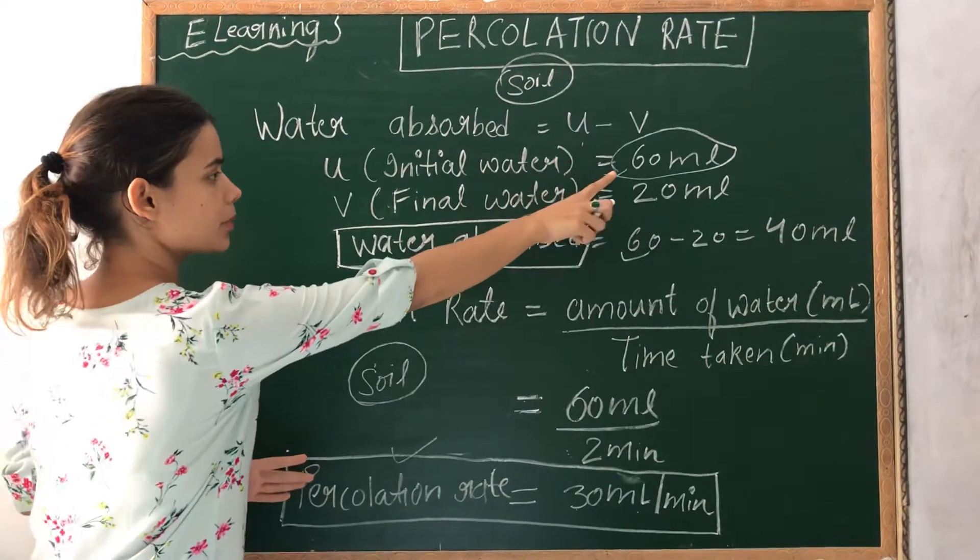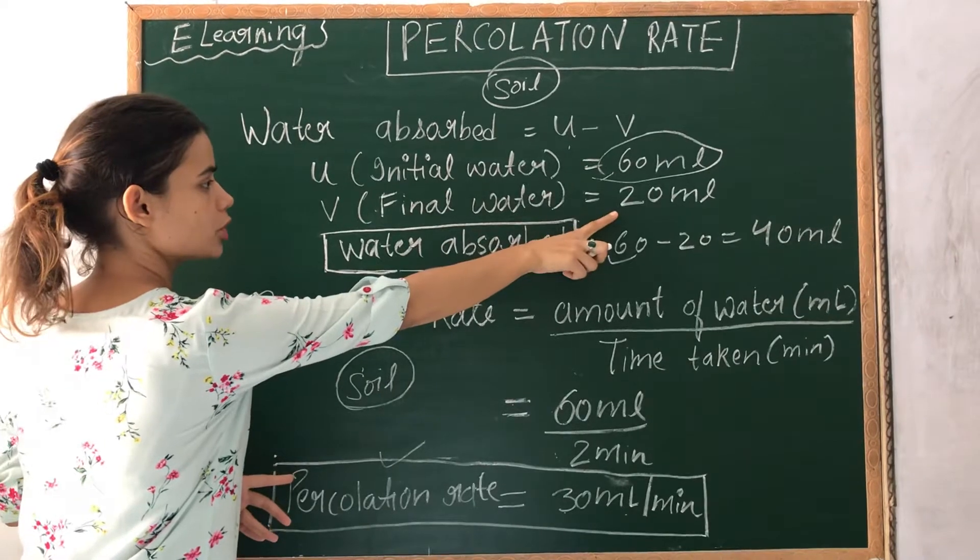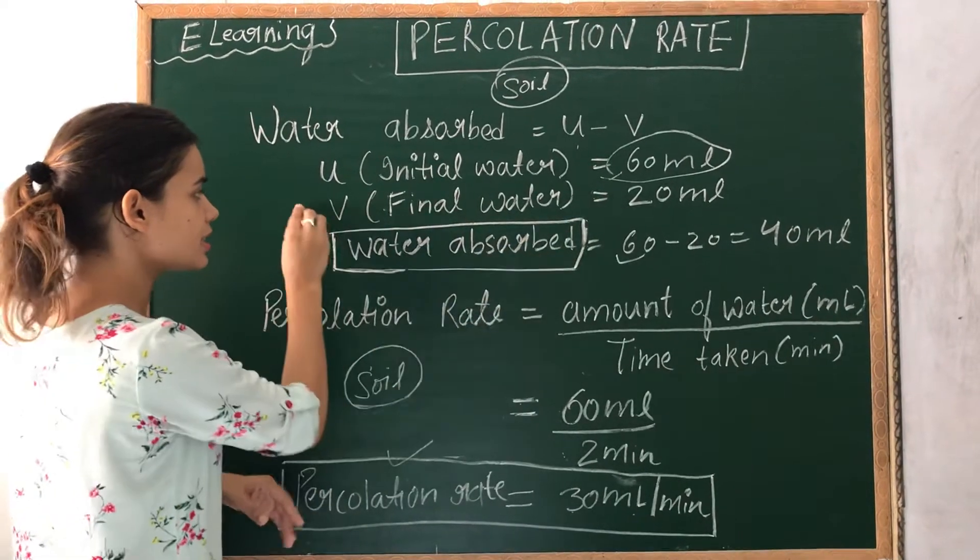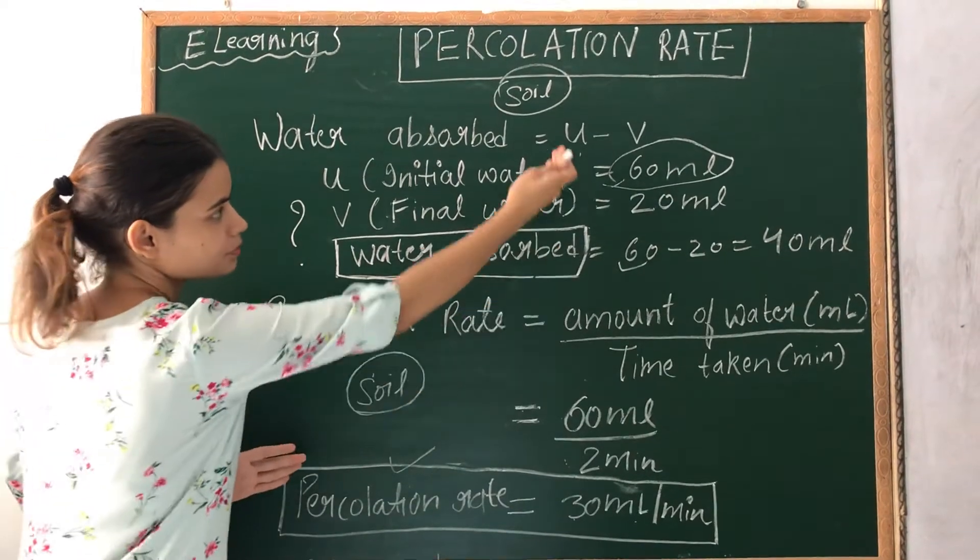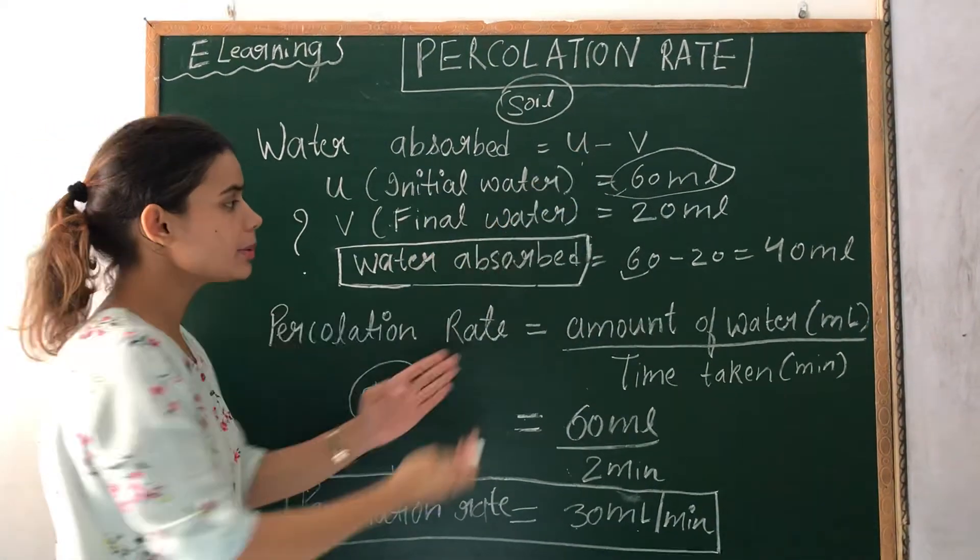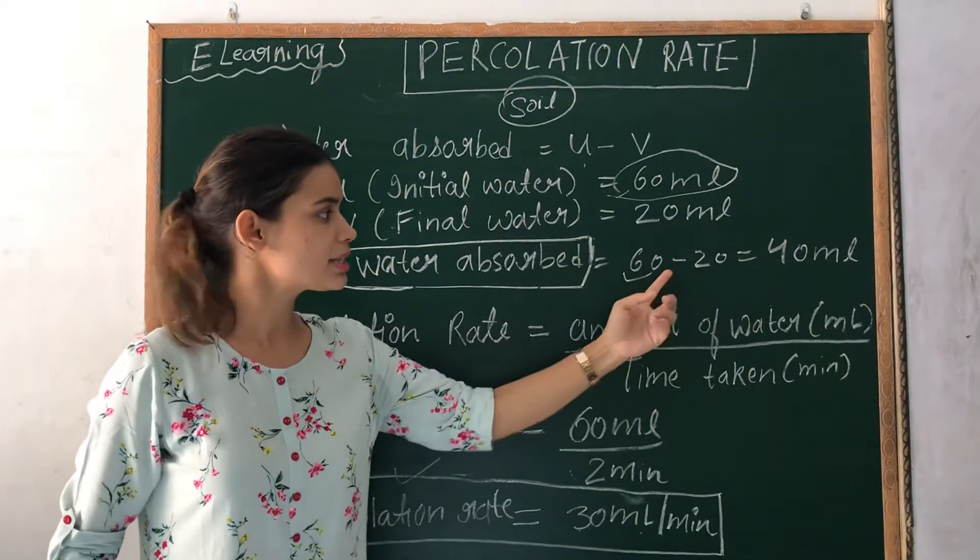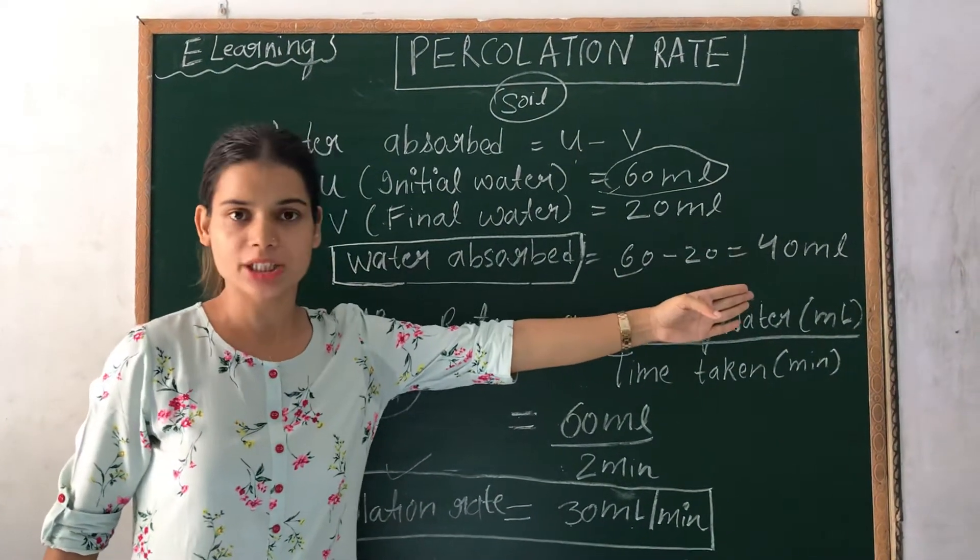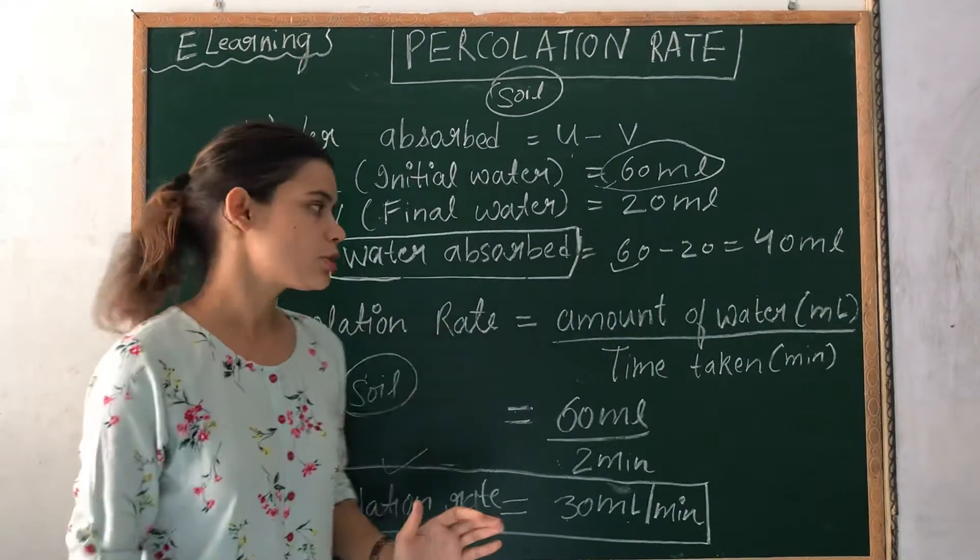In the experiment we took 60 ml of water. After percolation we got only 20 ml. This means some amount of water was absorbed by the soil. We can calculate that amount by the formula: 60 minus 20 equals 40 ml. So 40 ml of water was absorbed by that sample of soil.